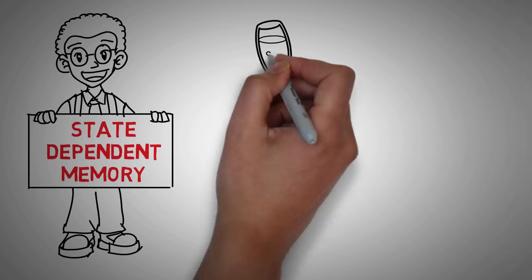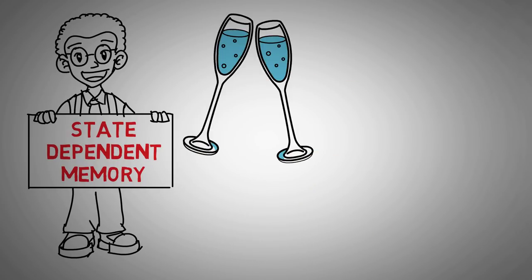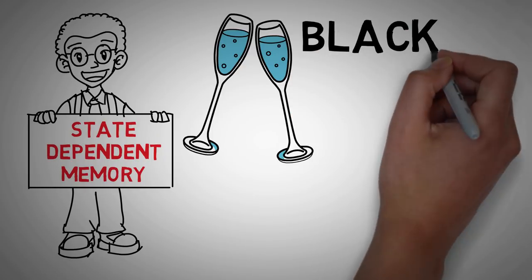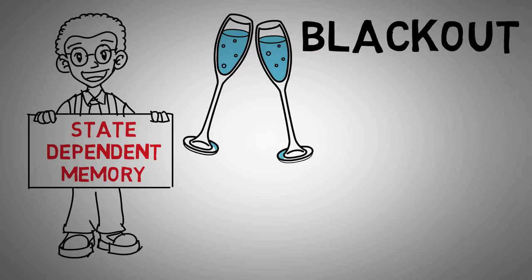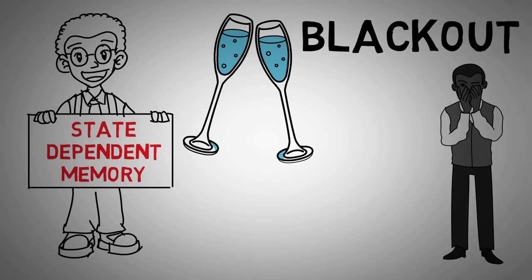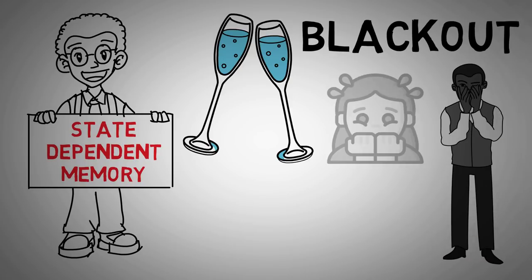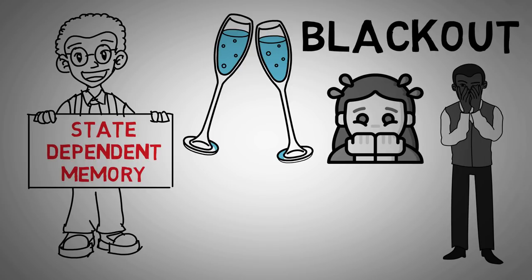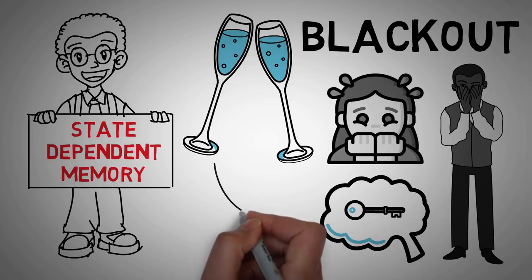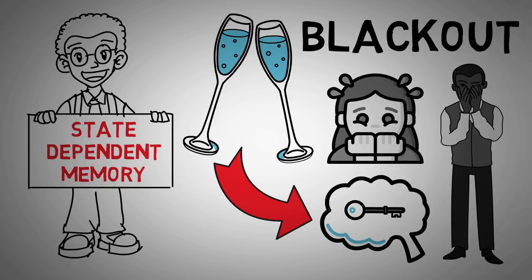It's no secret that alcohol can have a big effect on our memories. Too much alcohol can cause something called a blackout, in which your memories seem to be completely wiped forever. And the only way that you'll actually have a clue about what horrendous things you might have said on your big night out is if someone tells you. But did you know that some people can actually retrieve memories that they made while they were drunk by drinking? This is just one of the wacky ways that state-dependent memory works in the brain.